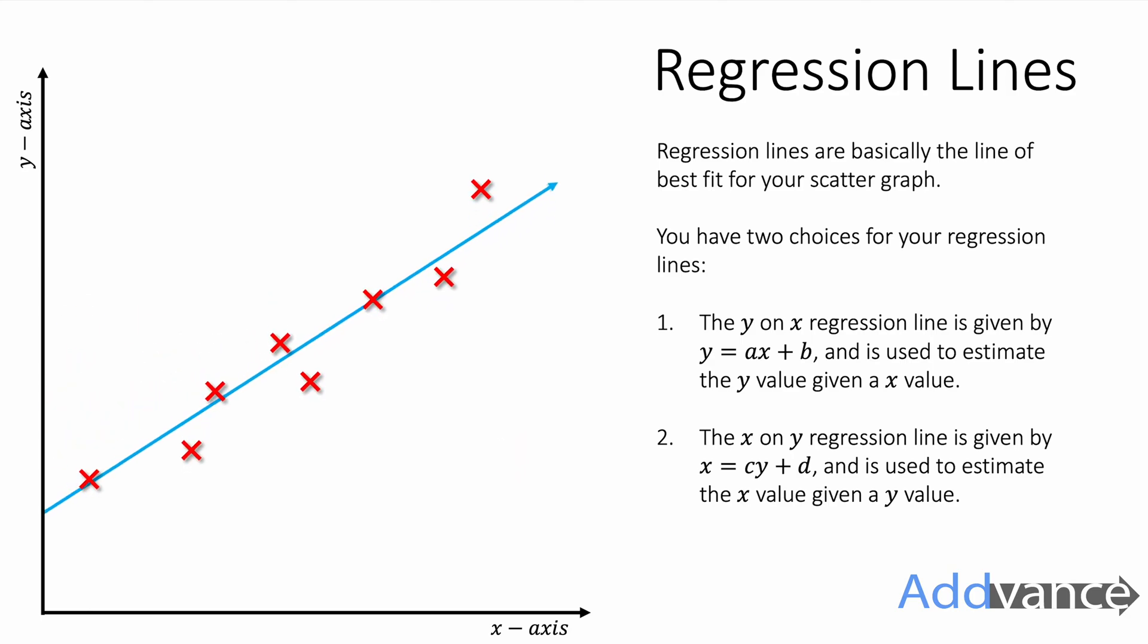You've got the y on x regression line which is given by y equals ax plus b and this is used to estimate the y value when you are given the x value.